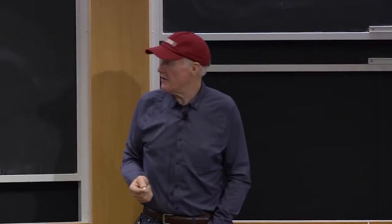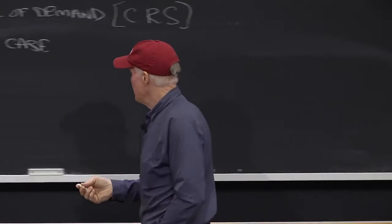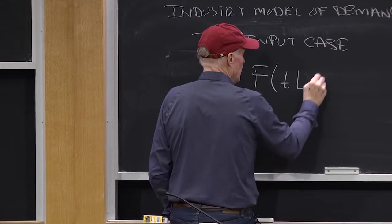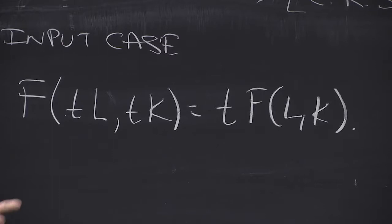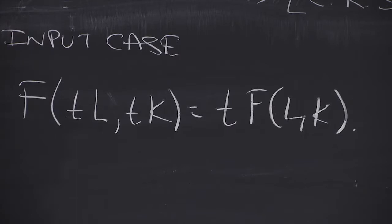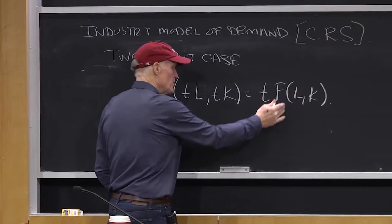Let's think about what constant returns-to-scale means. At a fundamental level, it says f(tL, tK) = t·f(L, K). That is, if I multiply the amount of labor and capital by some proportion t, I get that much more output. So if you make t equal to 2, it says twice as much labor and twice as much capital will produce twice as much output. That could be what's going on at the firm level, or maybe I'm just duplicating firms to get that same result.